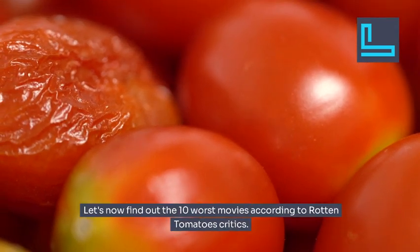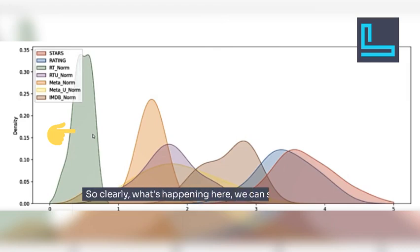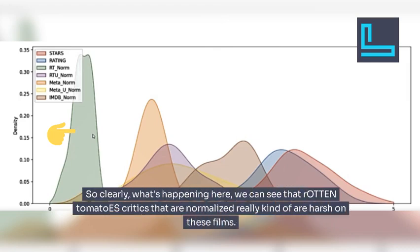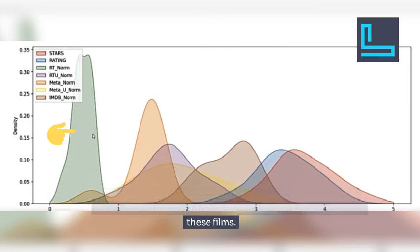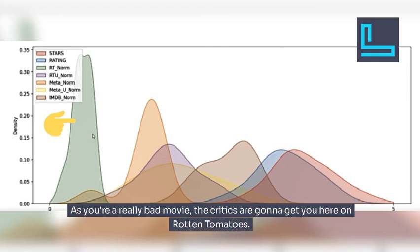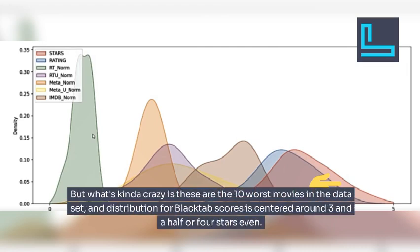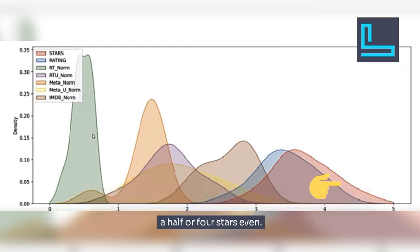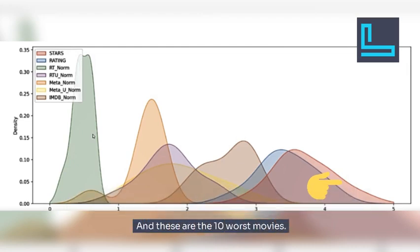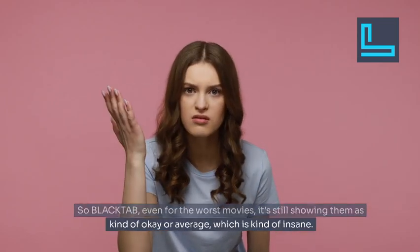Let's find the 10 worst movies according to Rotten Tomatoes critics and visualize their distribution. Rotten Tomatoes critics, when normalized, are really harsh on these films — not a single one of these films is getting more than one or two stars from Rotten Tomatoes critics. But these are the 10 worst movies in the dataset, and the distribution for Blacktab scores is centered around three and a half to four stars. Even for the worst movies, Blacktab is still showing them as kind of okay or average — which is kind of insane.